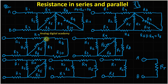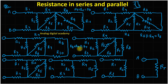And R7 will be in parallel with this combination. So we add R8 and R10, giving us R8 plus R10 in parallel with R7. You can see here their equivalent resistance, which we can assume equal to R8. So R8 is now in parallel with R7.